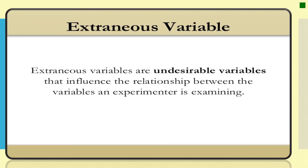Then we have the extraneous variable. Extraneous variables are undesirable variables that influence the relationship between the variables. These are variables that are not intentionally being studied in your experiment. For example, if the temperature affects performance, this is totally extraneous.